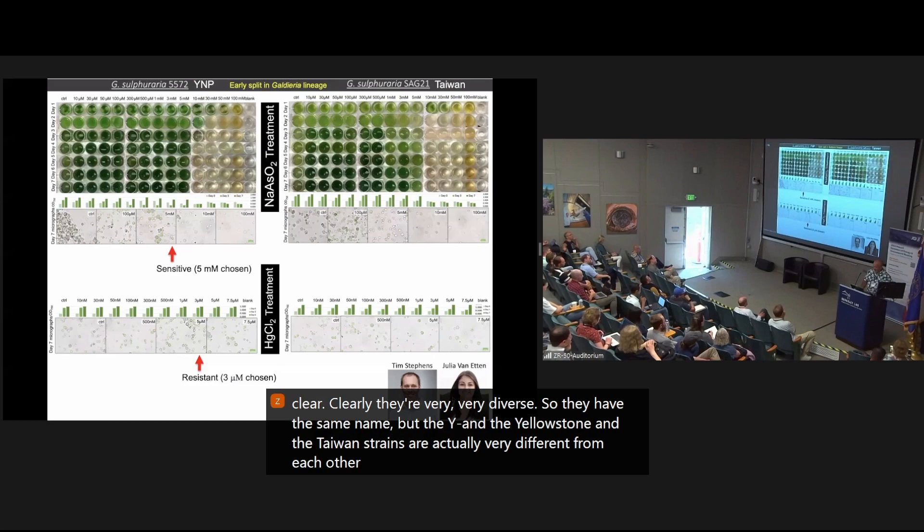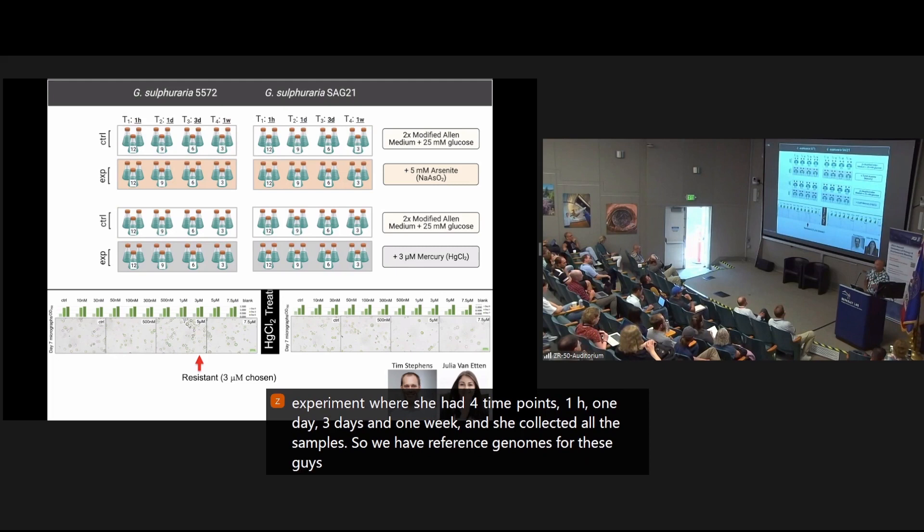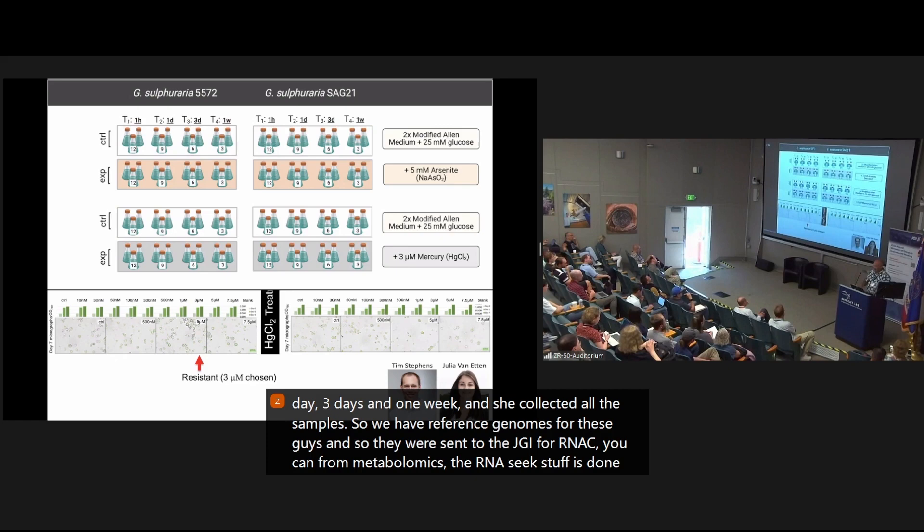So what she did is just a really standard experiment where she had four time points, one hour, one day, three days, and one week, and she collected all the samples. So we have reference genomes for these guys, and so they were sent to the JGI for RNA-seq and for metabolomics. The RNA-seq stuff is done. The metabolomics is still going to be done with Ben, Trent, and the team here.